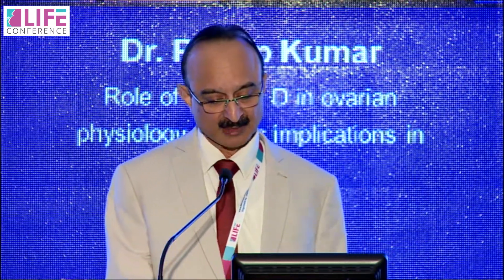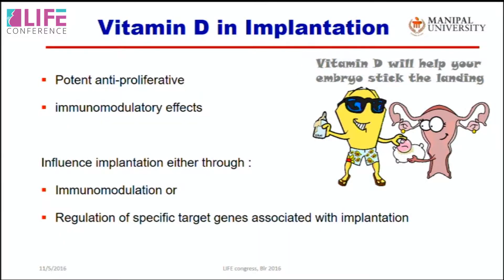Regarding implantation, vitamin D may play a role through anti-proliferative effects in deficiency states and immunomodulation in sufficiency. Vitamin D influences implantation through immunomodulation and regulation of specific target genes associated with implantation. Vitamin D3 has been shown to up-regulate endometrial expression of transcription factors that initiate the process of implantation, as proved in scientific research.